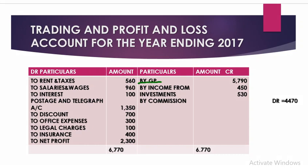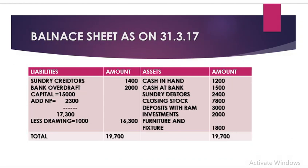In the profit and loss account, on the credit side we record: gross profit, income from investments, and commission. On the debit side we record all indirect expenses — office expenses, selling and distribution, and financial expenses — such as rent and taxes, salaries and wages, interest, postage and telegraph, discount, office expenses, legal charges, and insurance. Note: if wages and salaries are given, they go into the trading account. The total credit side is greater than the debit side, giving a net profit of 2,300, which is transferred to the capital account.